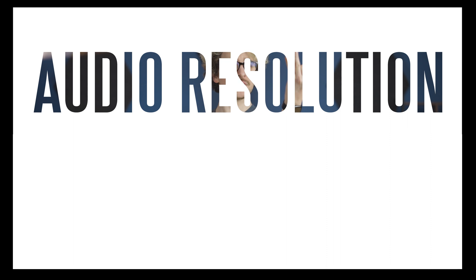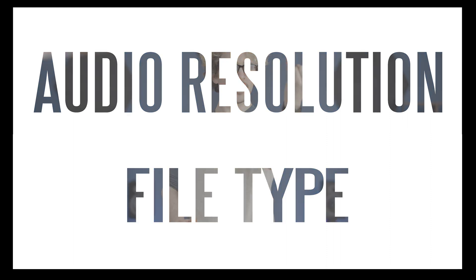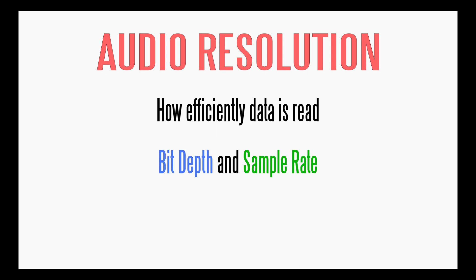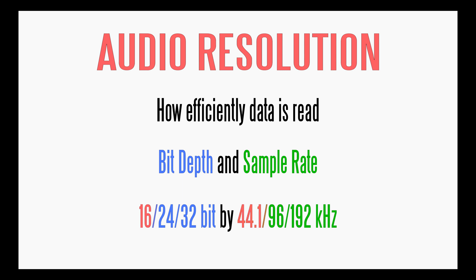All things considered, your DAC's success is determined by two things: audio resolution and file type. Put simply, your resolution is how fast and efficiently the audio data can be read. This is measured through bit depth and sample rate. For example, a 16-bit by 44.1 kilohertz resolution is considered relatively low quality, while a 32-bit by 192 kilohertz resolution is very high quality. You don't always need the highest resolution for your DAC to do the job, but it can certainly help.